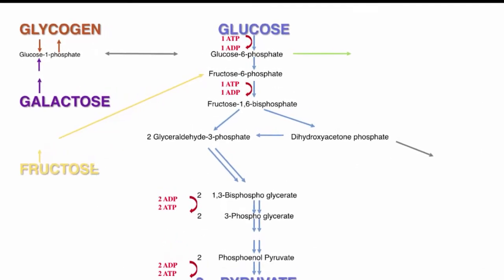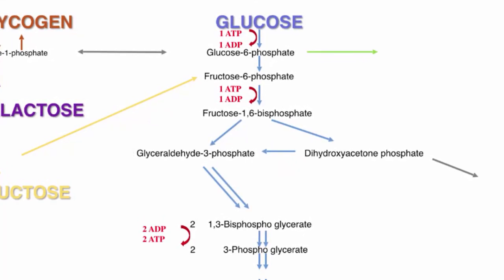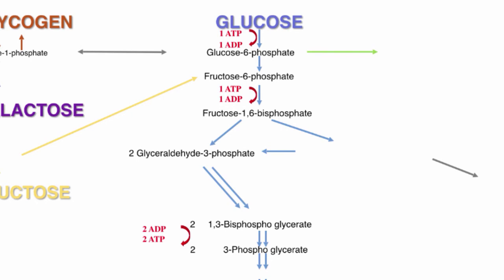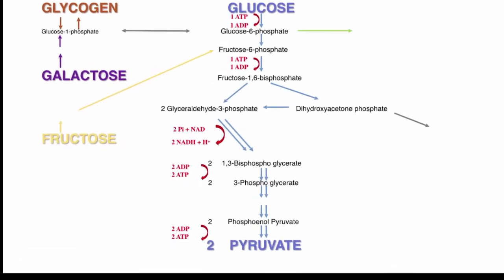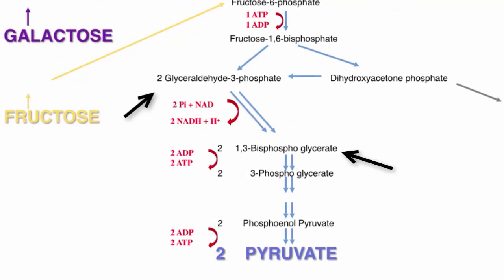The next step to look at is the middle step we skipped. When fructose 1,6-bisphosphate is converted to the next step, it actually splits into two parts with one phosphate going on each part. The two separate molecules are glyceraldehyde 3-phosphate and dihydroxyacetone phosphate. In order for the steps to keep going, the dihydroxyacetone phosphate must be turned into glyceraldehyde 3-phosphate, giving us two products of glyceraldehyde 3-phosphate. This step from the two glyceraldehyde 3-phosphate to the two 1,3-bisphosphoglycerate creates two NADH molecules and H+ molecules.